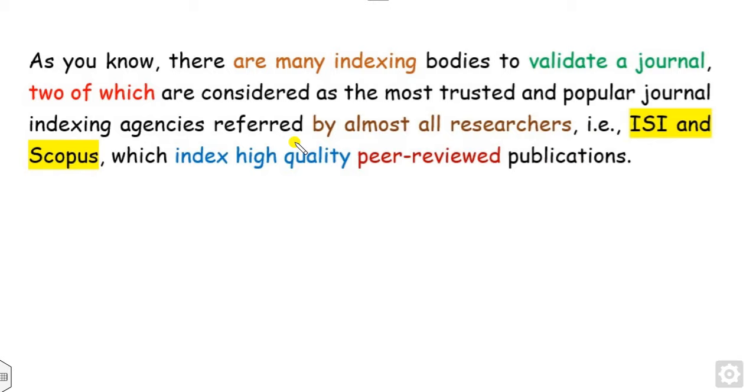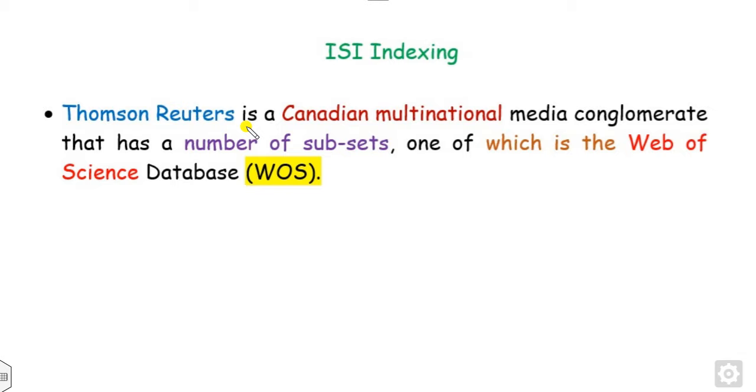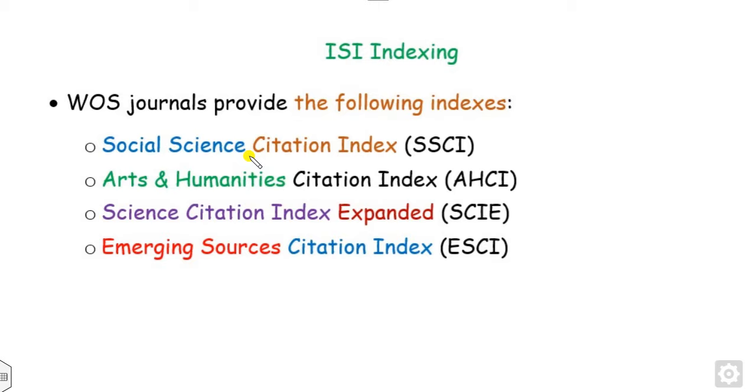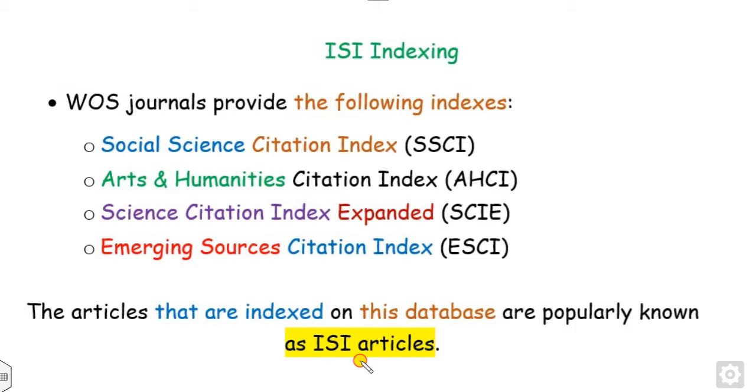What is ISI indexing? Thomas Reuters is a Canadian multinational media company that has a number of subsets, and one of them is Web of Science. Web of Science was originally produced by the Institute for Scientific Information, abbreviated as ISI, and later maintained by Clarivate Analytics. Web of Science includes four categories: SSCI, AHCI, SCI, and ESCI. All articles published under these are called ISI articles.